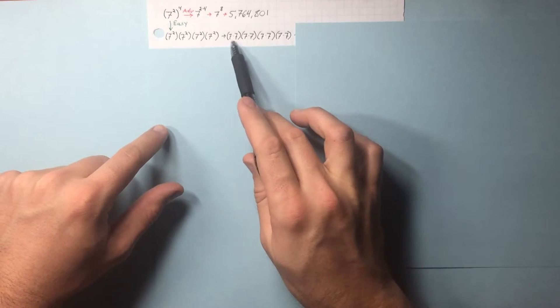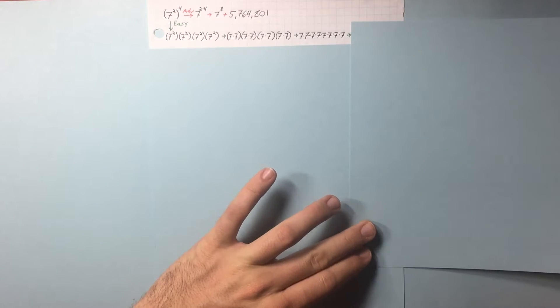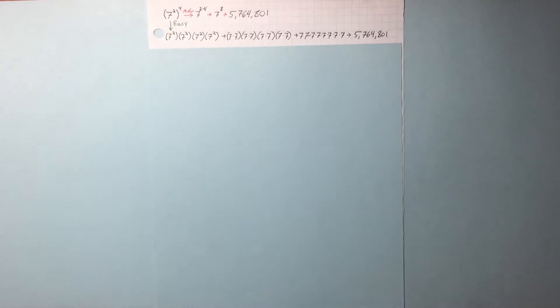7 squared is really the same as 7 times 7, so I broke it apart. There ended up being 8 7s. It's 7 to the 8th, the same answer. Let's do another one.